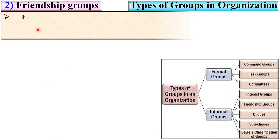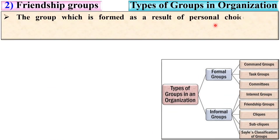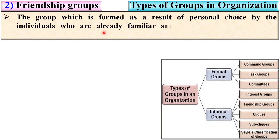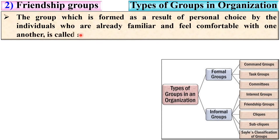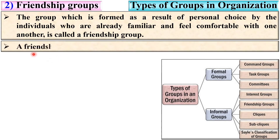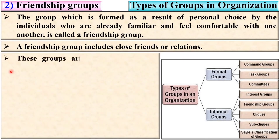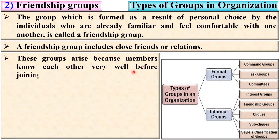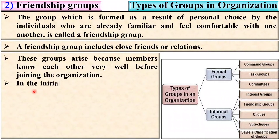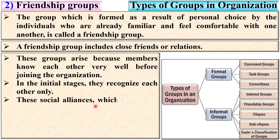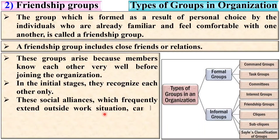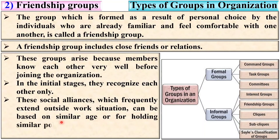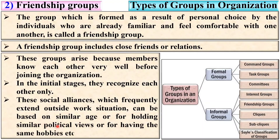Next, friendship groups: the group formed as a result of personal choice by individuals who are already familiar and feel comfortable with one another is called a friendship group. It includes close friends or relations. These groups arise because members know each other well before or after joining the organization. These social alliances, which frequently extend outside work, can be based on similar age, similar political views, or the same hobbies.